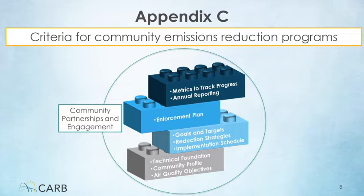Appendix C includes the criteria for the local plans to improve air quality, known as community emissions reduction programs. These criteria establish requirements for community partnerships and engagement to guide the development and implementation of the programs. The criteria also cover required elements including a strong technical foundation, goals and targets, specific strategies to reduce emissions and exposure, and mechanisms to track progress over time.